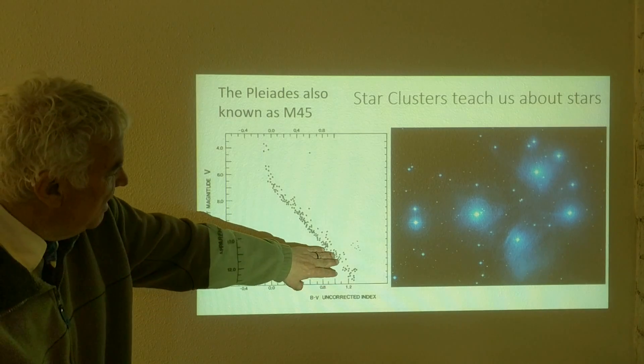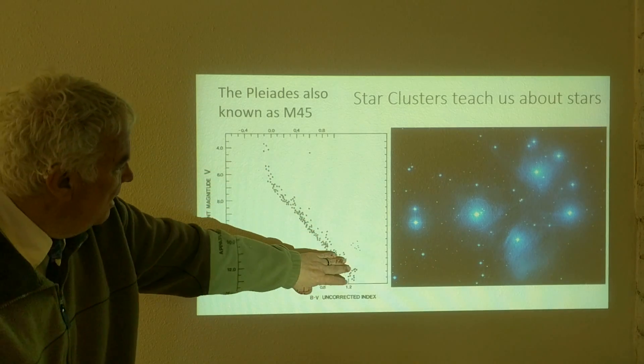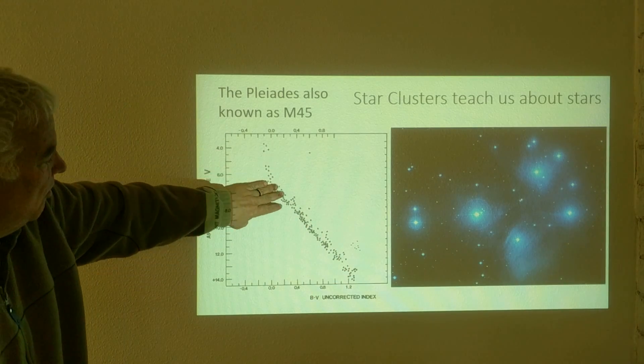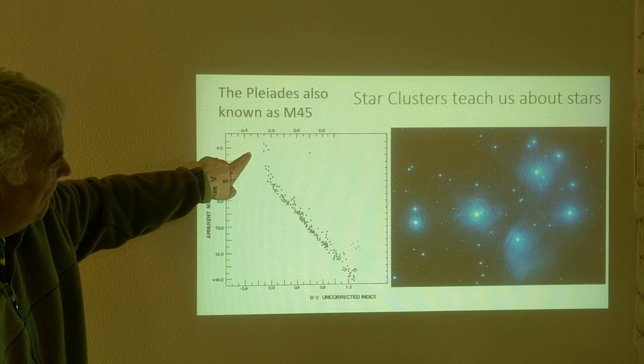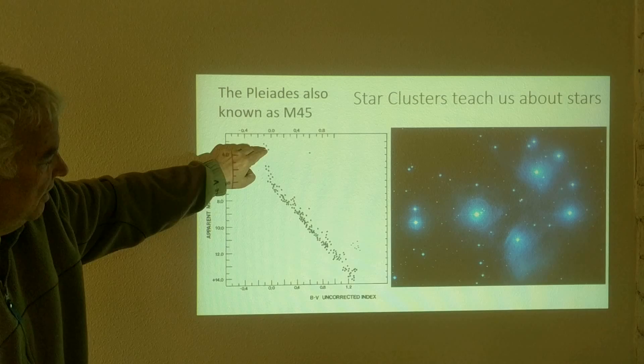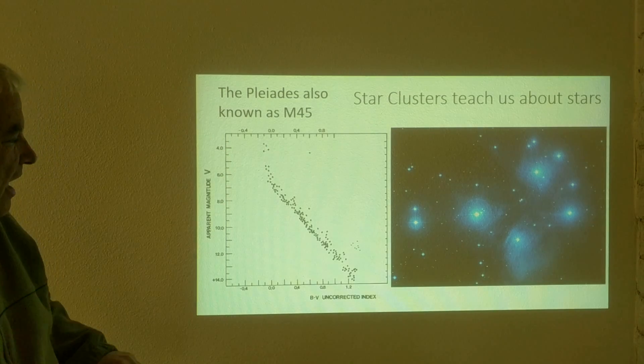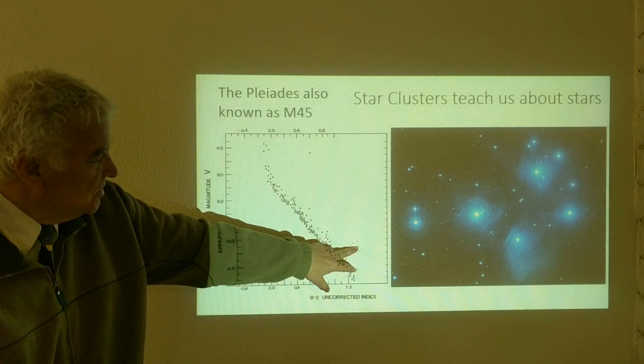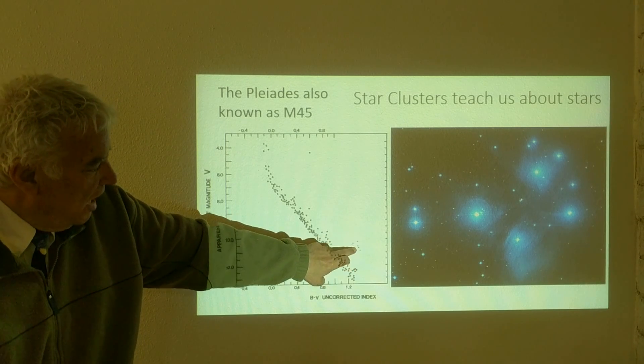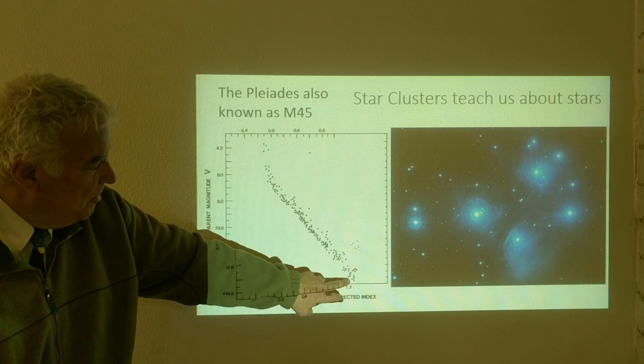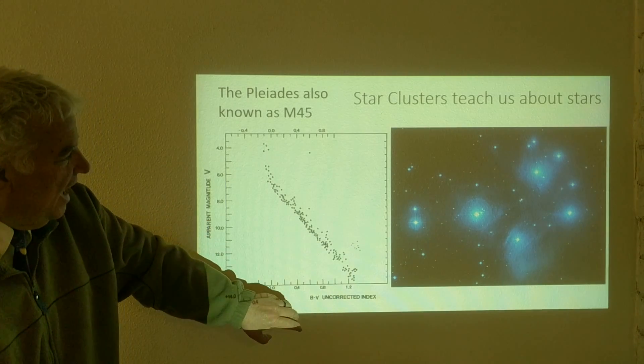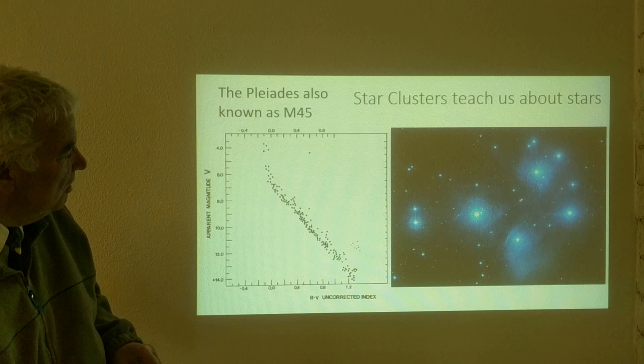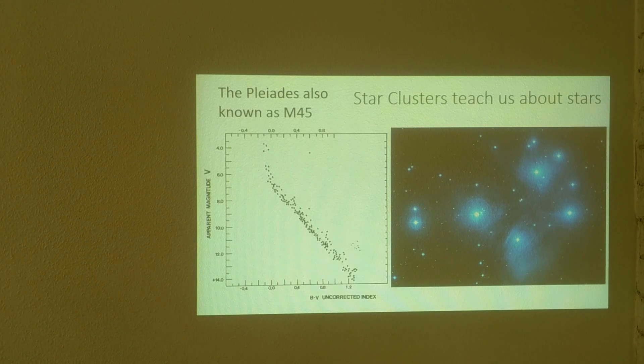Here we see only the main sequence and we see the main sequence moving all the way up and we see some stars may have moved from the main sequence over here. And there are some stars that are not yet on the main sequence. They have not yet joined the main sequence, but we can see that this is a very young cluster. It's known as the Pleiades, also M45.